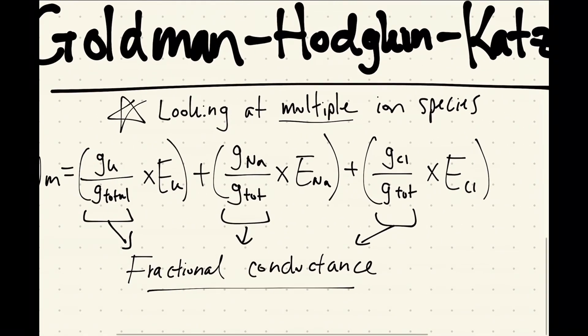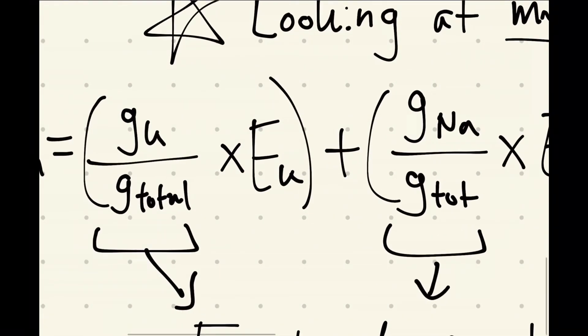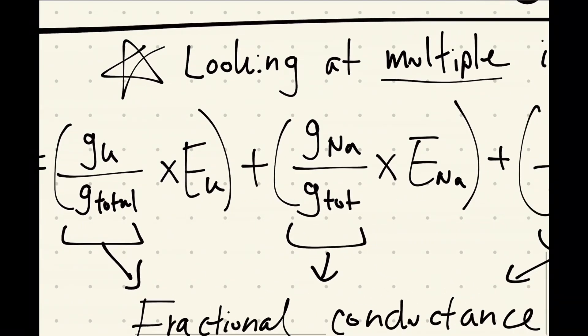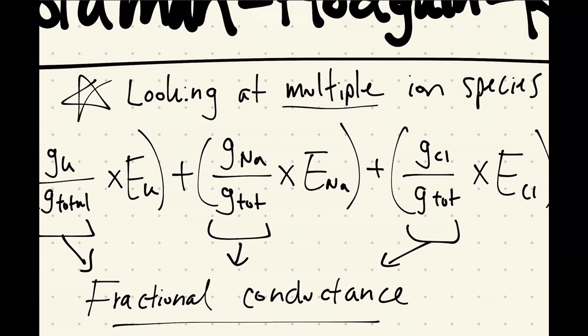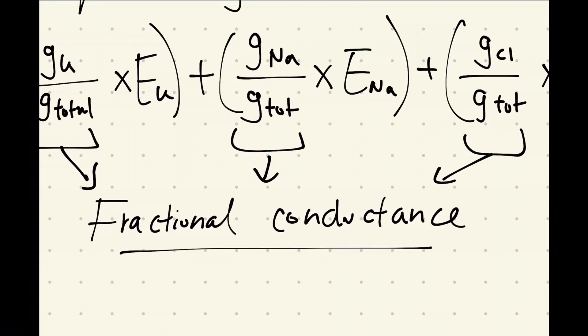So what it's looking at is the fractional conductance of your potassium—your conductance of your potassium over the total conductance, which is basically your K plus your Na plus your Cl together. So that's what makes up the fractional conductance.